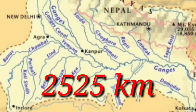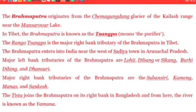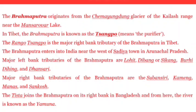Now, the Brahmaputra river system. Brahmaputra originates from the Chemayungdung glacier of the Kailash ranges, near Manasarovar lake in Tibet. In Tibet, the Brahmaputra is known as Tsangpo, which means 'the purifier.' The Rango Tsangpo is the major right bank tributary of the Brahmaputra in Tibet. Brahmaputra enters India near the west of Sadiya town in Arunachal Pradesh.